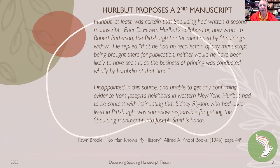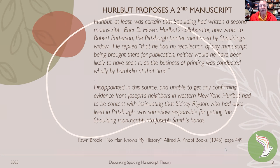Despite this, it's interesting to see how many people still love this theory. Hurlbut proposed that there must have been a second manuscript. E.D. Howe wrote to Robert Patterson, the Pittsburgh printer mentioned by Spalding's widow. He replied that he had no recollection of any manuscript being brought there for publication, and neither would he likely have seen it, as the business of printing was conducted wholly by Lambden at the time. Disappointed and unable to get confirming evidence from Joseph Smith's neighbors in western New York, Hurlbut had to be content with insinuating that Sidney Rigdon — who had once lived in Pittsburgh — was somehow responsible for getting the Spalding manuscript into Joseph Smith's hands.